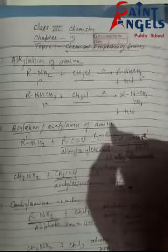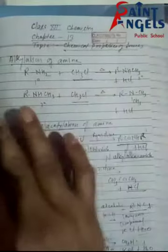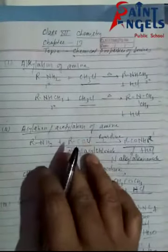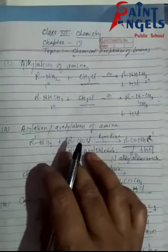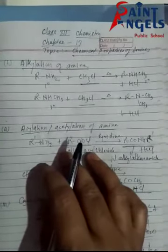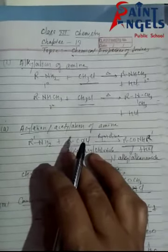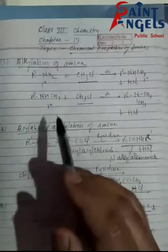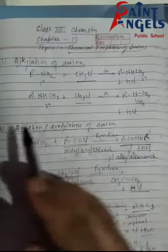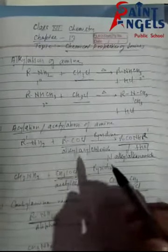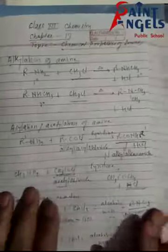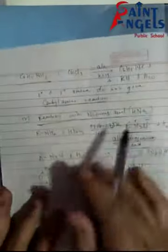Hello students, we are providing St. Angelo online classes as we are working from home. Today I will discuss Class 12 Chemistry Chapter 13, and today's topic is chemical properties of amines. In the previous video, we already discussed different chemical properties of amines like alkylation of amines, acylation of amines, and the carbylamine reaction. Now I will discuss the reaction of amines with nitrous acid.